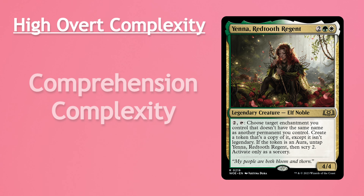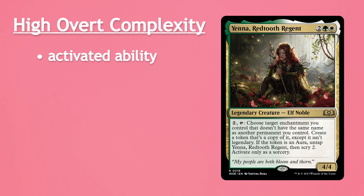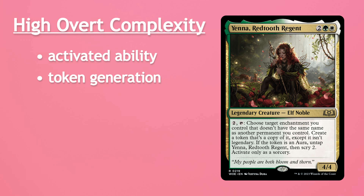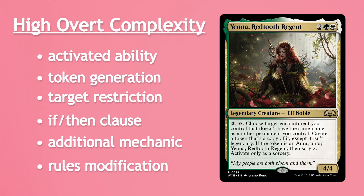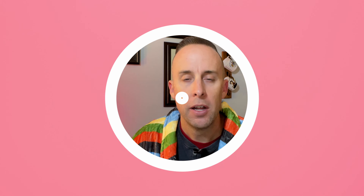So what is complexity within Magic the Gathering? Complexity is defined as the state or quality of being intricate or complicated. In 2019, computer science researchers proved that a game of Magic between two players was so complex as to be non-computable.